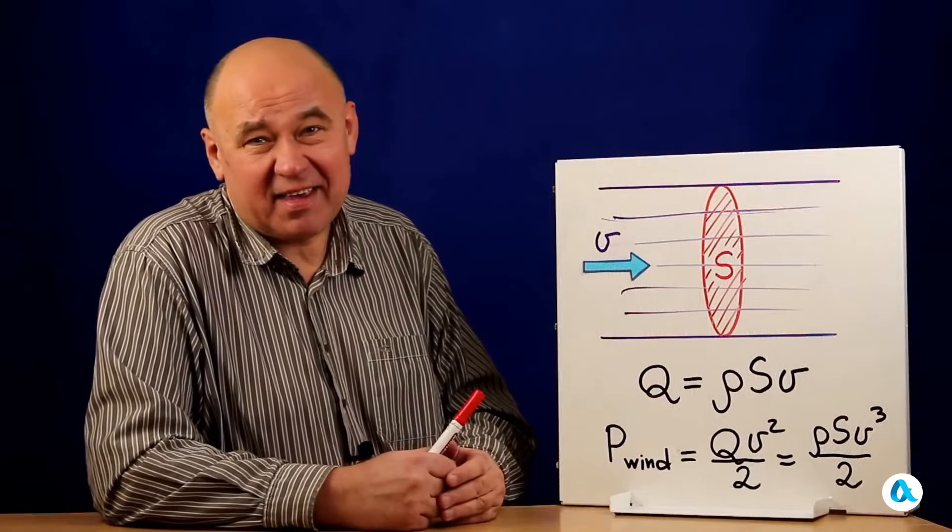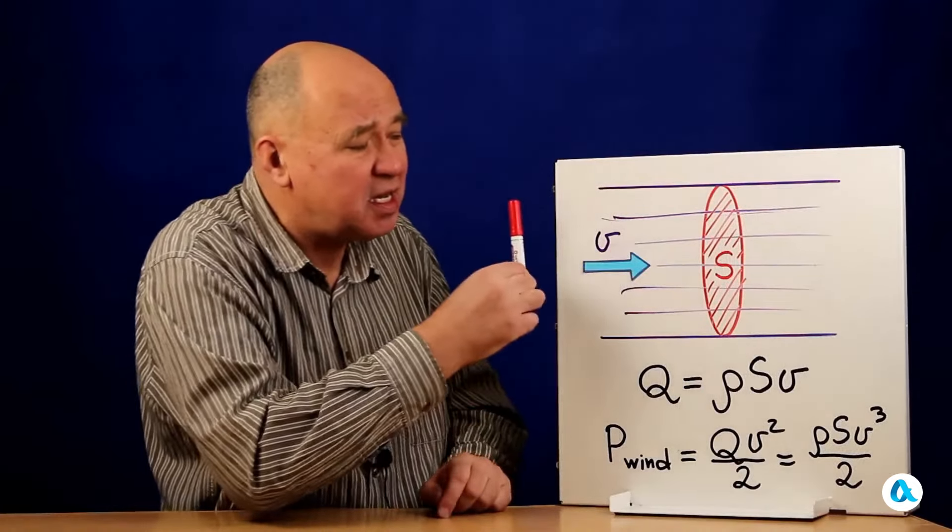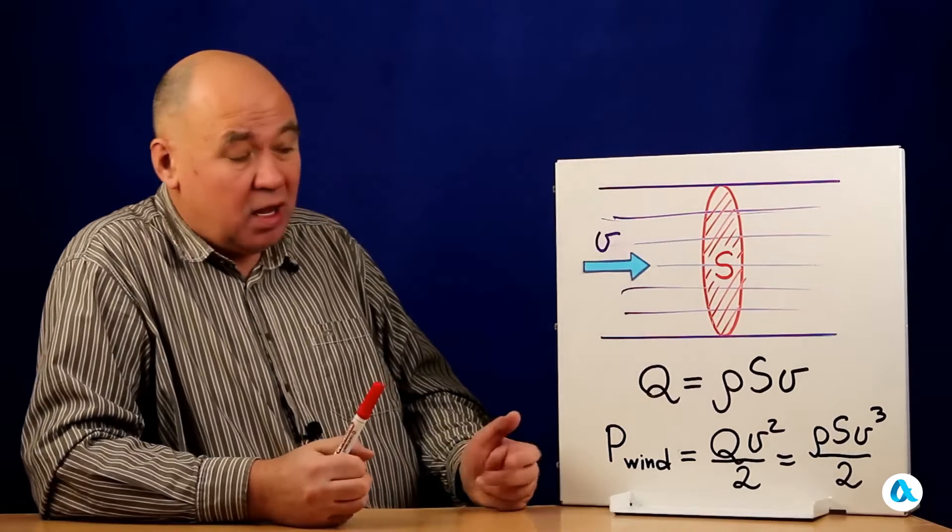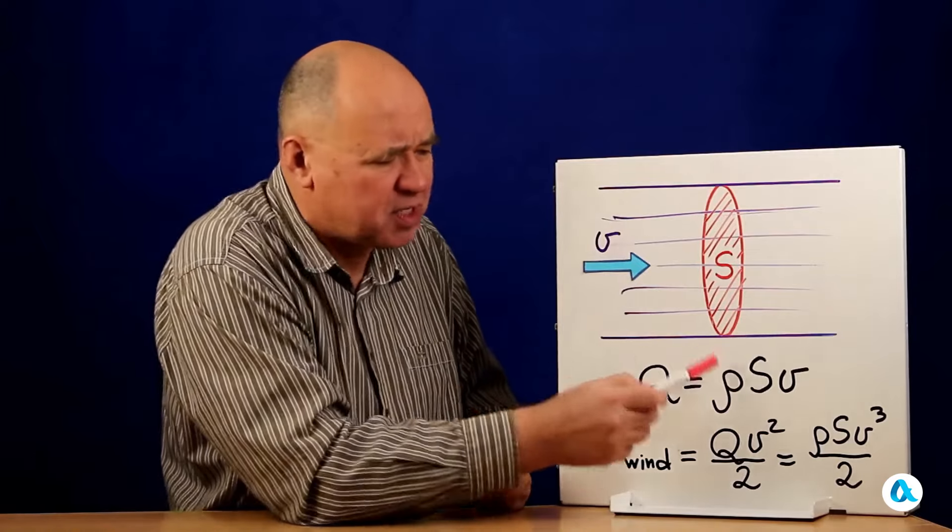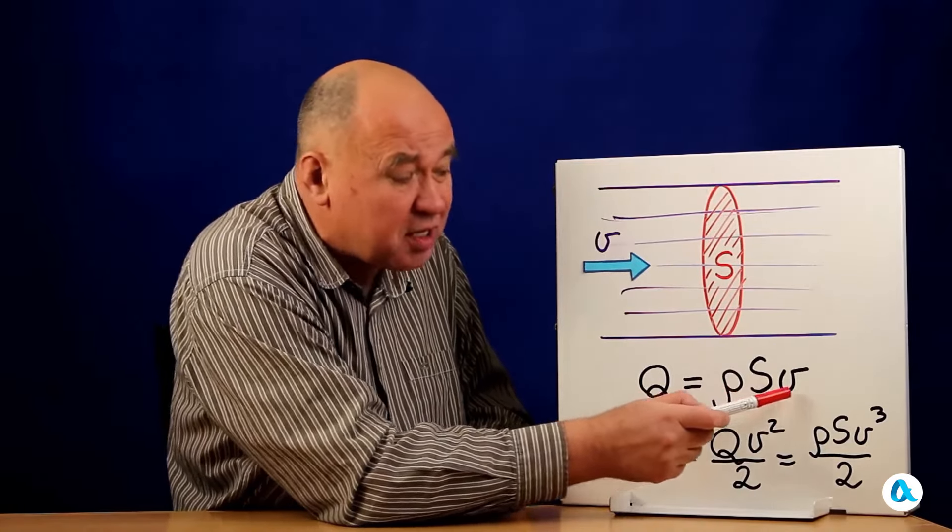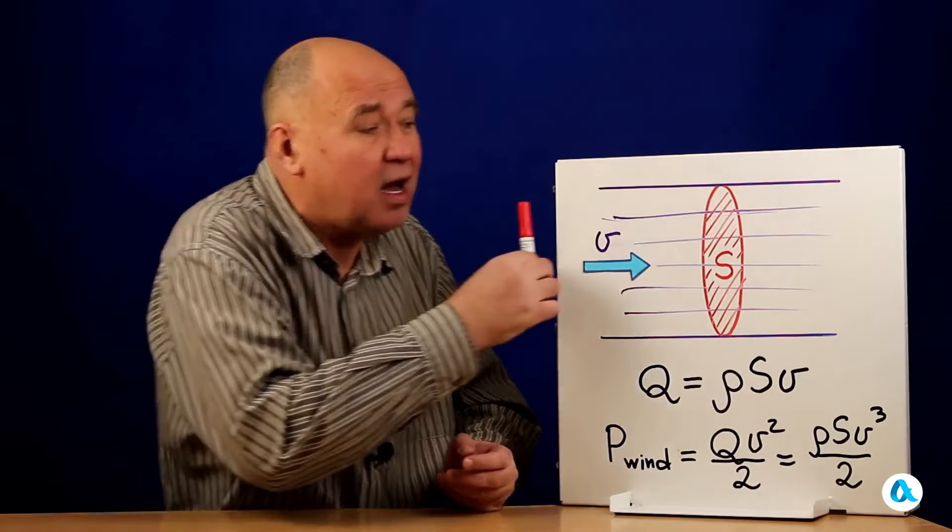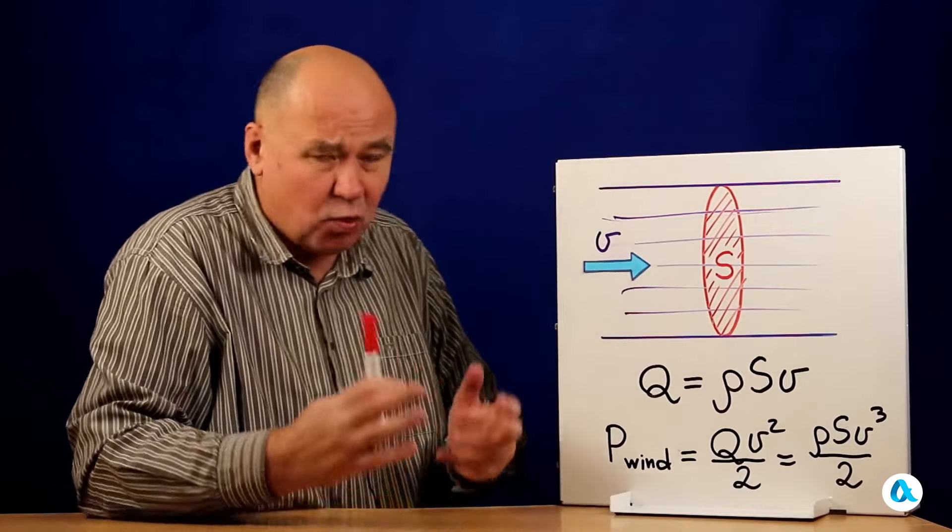And here is my first picture. It shows a transparent disc with an area of s, and a wind flow is passing through it at a speed of v. The question is, what mass flows through per unit of time? This is the product of density and volume per unit of time, i.e. area and speed. Knowing the mass, we can also determine the energy passing through this disc per unit of time, i.e. the power of the wind.